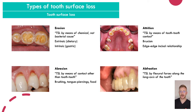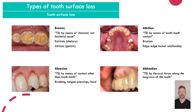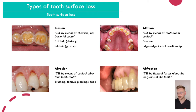Abrasion is tooth wear from contact with something that isn't teeth — for example, someone who brushes too hard and wears the teeth down, someone with a tongue piercing causing lingual wear on the lower anteriors, or hard foods. People who chew betel nut, for example, tend to have quite flat posterior teeth due to the abrasive nature of it.